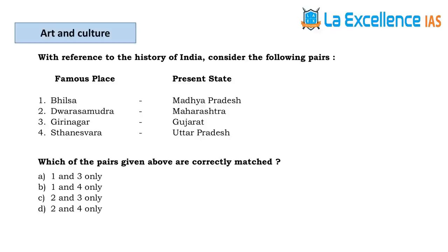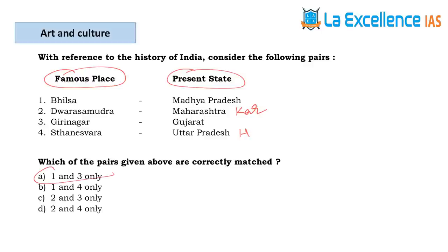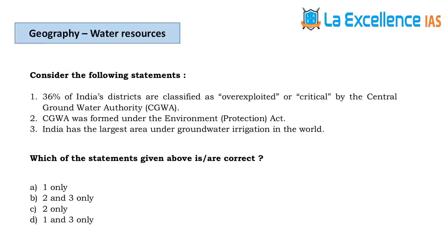The next question is a factual matching question — match famous places with their present states. Dvarasamudra is in Karnataka and Thaneshwara is in Haryana. Because of which the answer for this question is A.